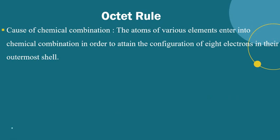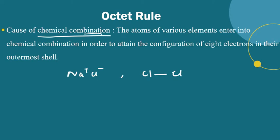What is the octet rule? When a molecule forms through chemical combination, the atoms combine either by the transfer of valence electrons from one to another, or by sharing electrons between them, in order to achieve an octet in their valence shell.